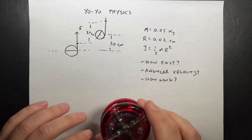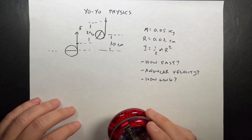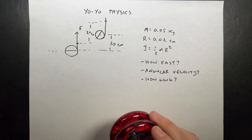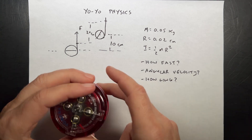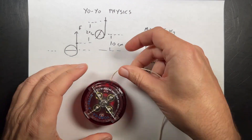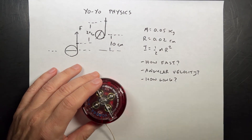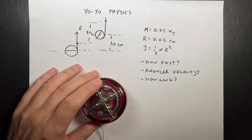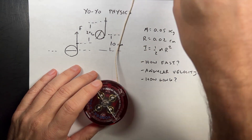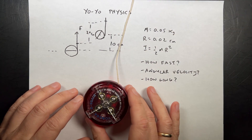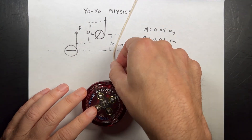I made up a yo-yo problem, and I don't know if it's going to work out nice or not. I didn't really test it out, but we're going to do it anyway. So here's the problem. Imagine that I have a yo-yo — and you don't really have to imagine it, because it's right here. Here's the yo-yo.